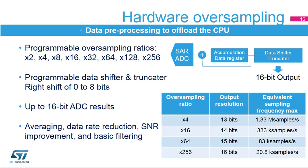The ADCs support hardware oversampling. They can sample by 2, 4, 8, 16, 32, 64, 128, and 256 times without CPU support. The converted data is accumulated in a register and the output can be processed by the data shifter and truncator. 12-bit data can be extended to be presented as 16-bit data. This functionality can be used as an averaging function or for data rate reduction, signal-to-noise ratio improvement, as well as basic filtering.